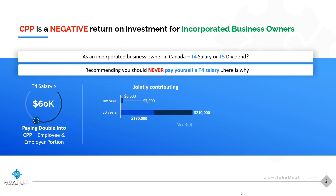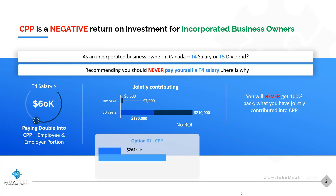If you do this over a 30-year time period, you've contributed between $6,000 and $7,000 per year — or $180,000 to $210,000 over that 30-year period. And what we're saying is you will never get 100% back of what you jointly contributed into the Canada Pension Plan.